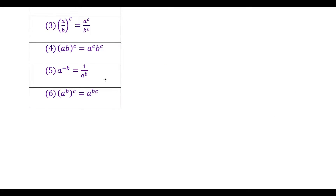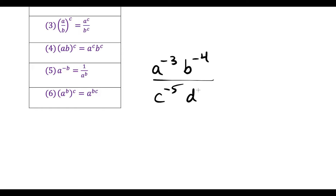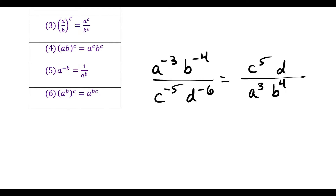A little side note — if rule five is tricky, here's an example to master it: if I have a to the negative three times b to the negative four, over c to the negative five times d to the negative six, anytime I want to change a negative exponent I send it through the fraction. So a to the negative three on top sends down as a to the positive three, b to the negative four sends down as b to the positive four, and c to the fifth and d to the sixth come up from the bottom.